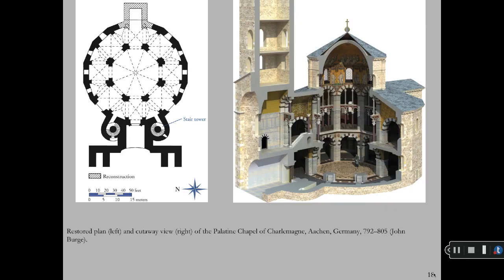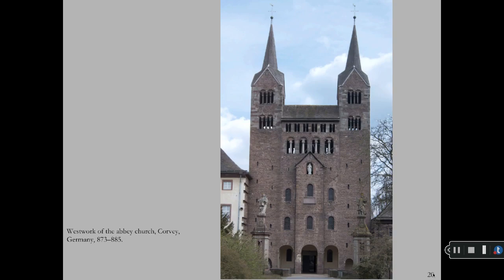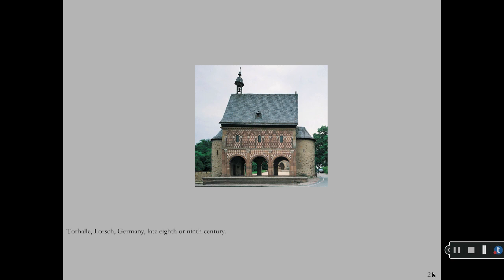Charlemagne's Palatine Chapel in the capital of Aachen, Germany, has a plan based on the design of San Vitale in Italy. Westwork is the façade and bell towers integrated into churches, established in much of the late 800s. The tor hall, or gate to a Carolingian monastery in Lorsch, Germany, dates to the late 8th to 9th century.